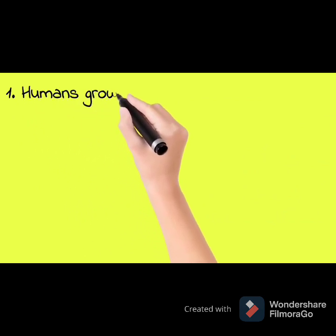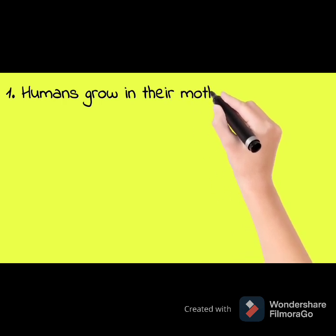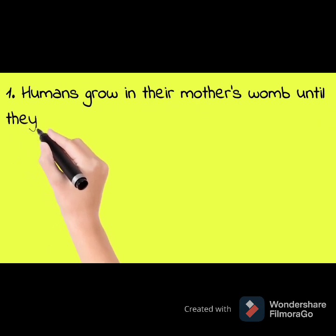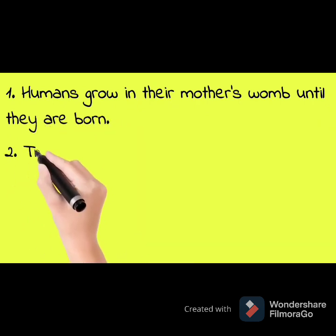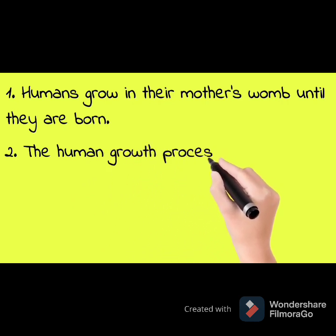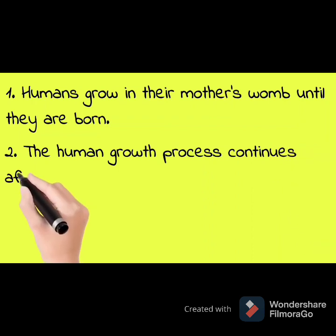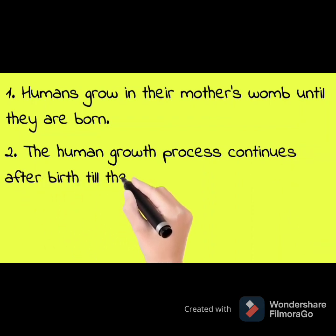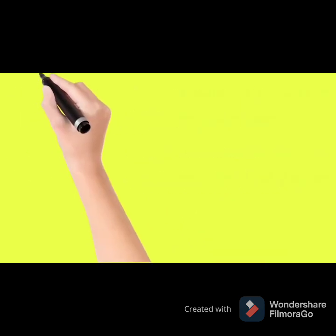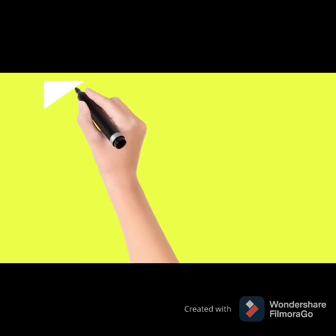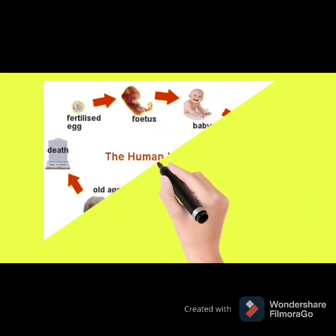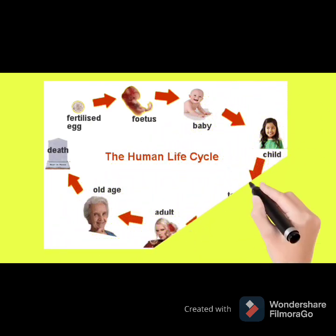Humans grow in their mother's womb until they are born. The human's growth process continues after birth till they grow up. This is the human life cycle. Stage 1: baby,